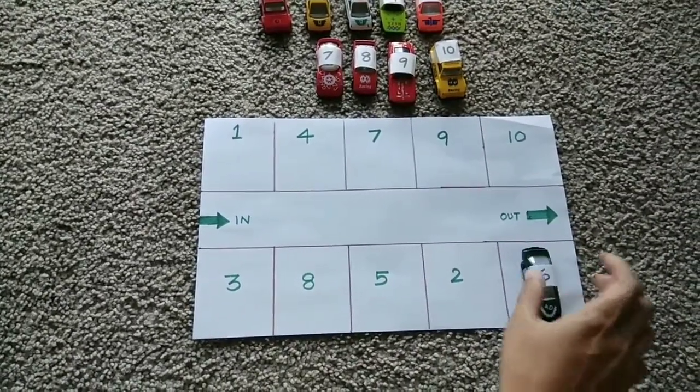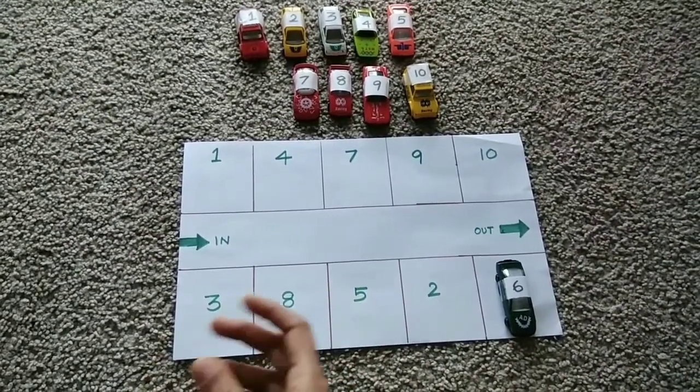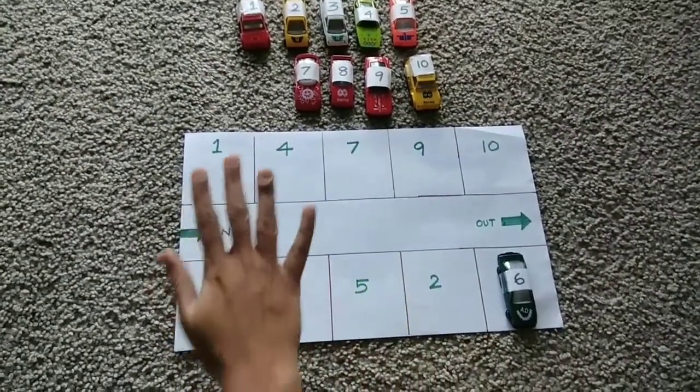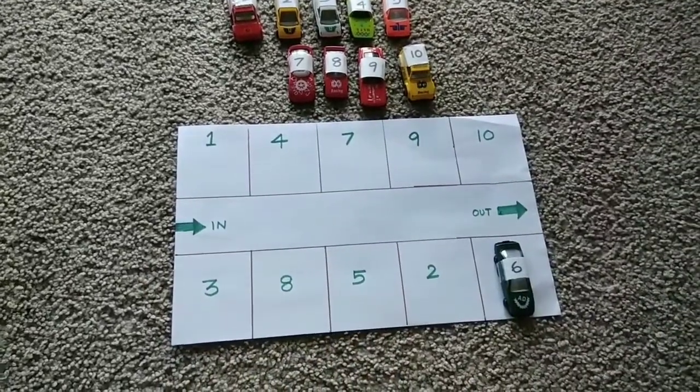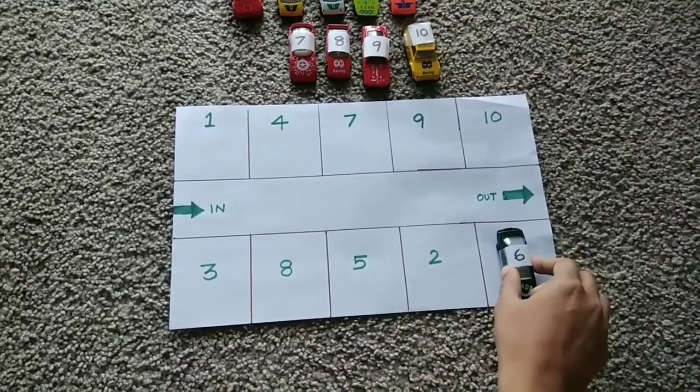In the same way, ask them to take out also some specific numbers. For example, if they completed parking all the slots, ask them to take out some numbers. Ask them to take number 6 car out. They have to come in this way.